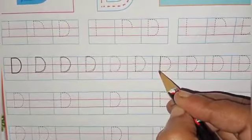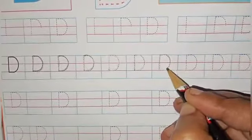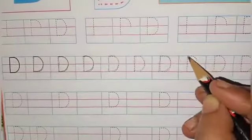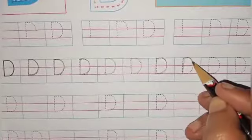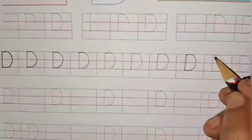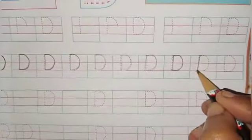While writing, you have to say the letter also. Okay, children? Which letter is this? This is capital letter D. Capital letter D.